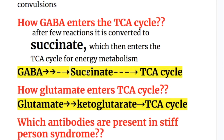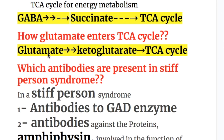Both GABA and glutamate can enter the TCA cycle. After a few reactions, GABA is converted to succinate, which then enters the TCA cycle for energy production. Glutamate is converted to alpha-ketoglutarate and then enters the TCA cycle.